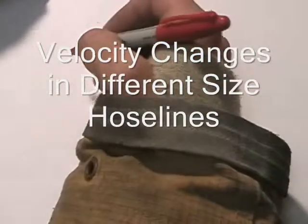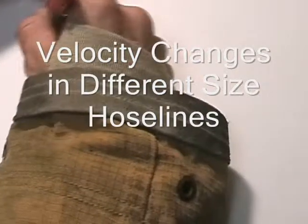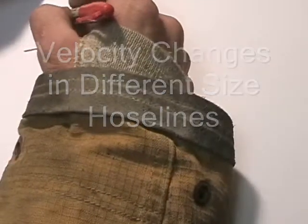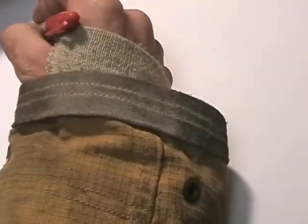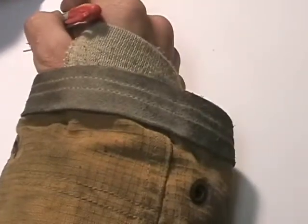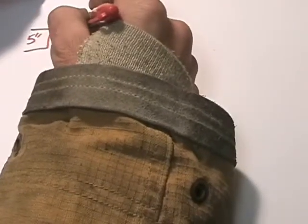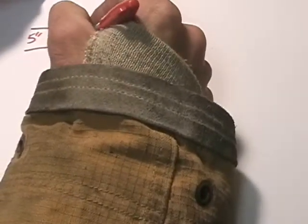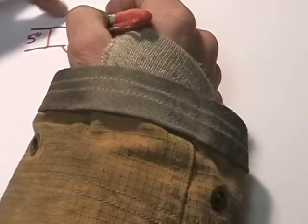This problem will explain how to calculate velocities. Usually it'll start with a hose that's going into a smaller hose. Let's say we've got a 5-inch diameter hoseline that's traveling into a manifold that's gated down to 3 inches in diameter.